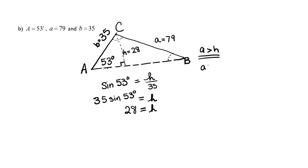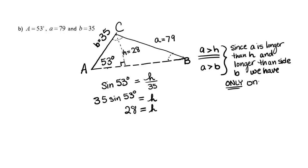Which means A is greater than H. We also do not have an ambiguous case because A is larger than B, and so we will only have one triangle. Since A is longer than H and longer than B, we have only one triangle.